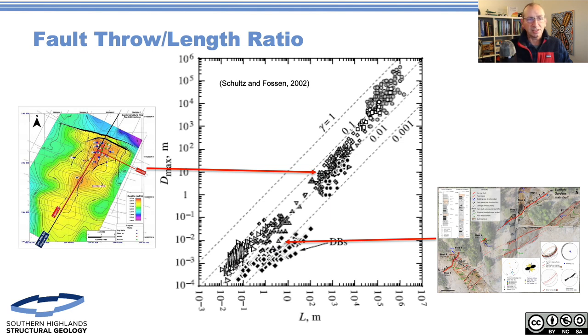This is a really nice diagram - it shows a depth structure contour map across a field in Indonesia with the faults, but also shows the information that went into it: the wells and 2D seismic. You've got a sense of how good or bad this interpretation is. This is what we should all be doing - posting our data.